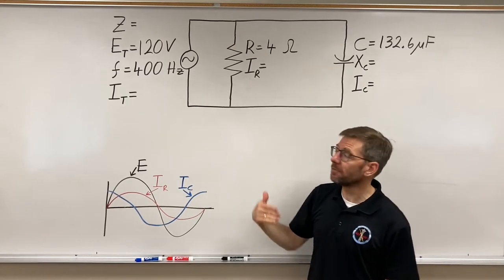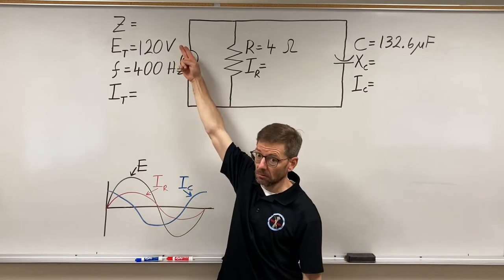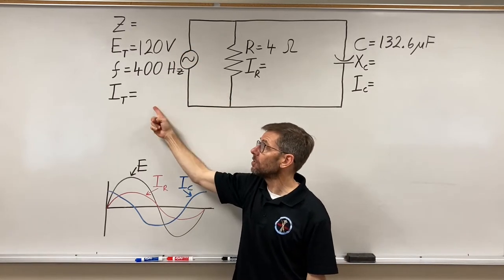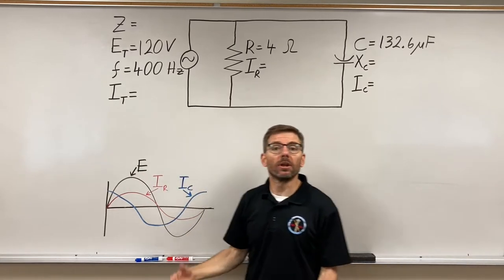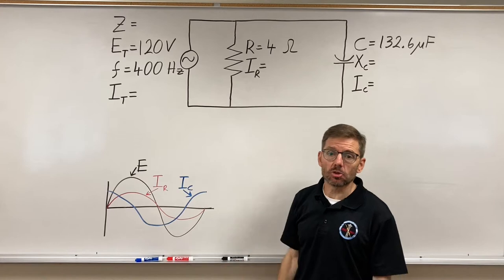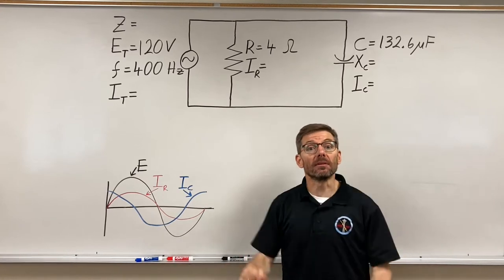And we're going to try and find impedance, total circuit opposition, and total current. We could do it a couple of ways to get the impedance. We're going to start off with the formula version this time.